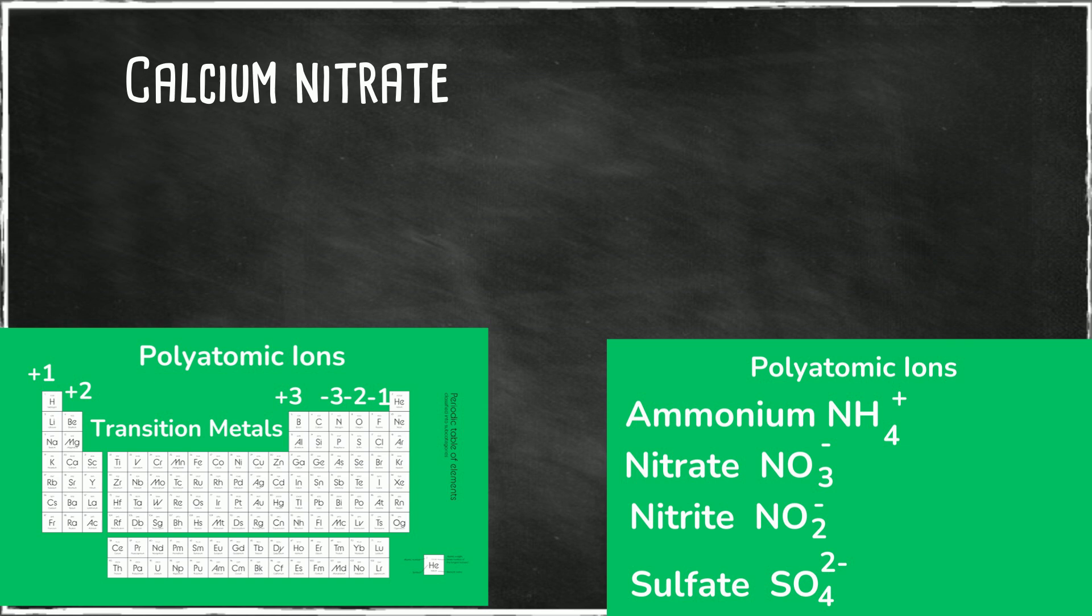Next, we have calcium nitrate. Calcium is in group 2 so it has a plus 2 charge. I'm going to look at my polyatomic ion list and it tells me that nitrate has a negative 1 charge. So right now we do not have a zero charge.